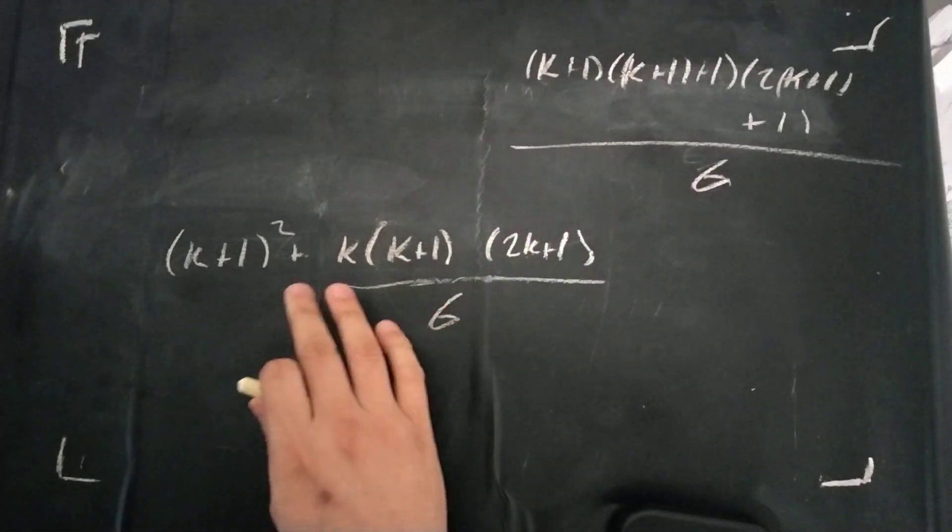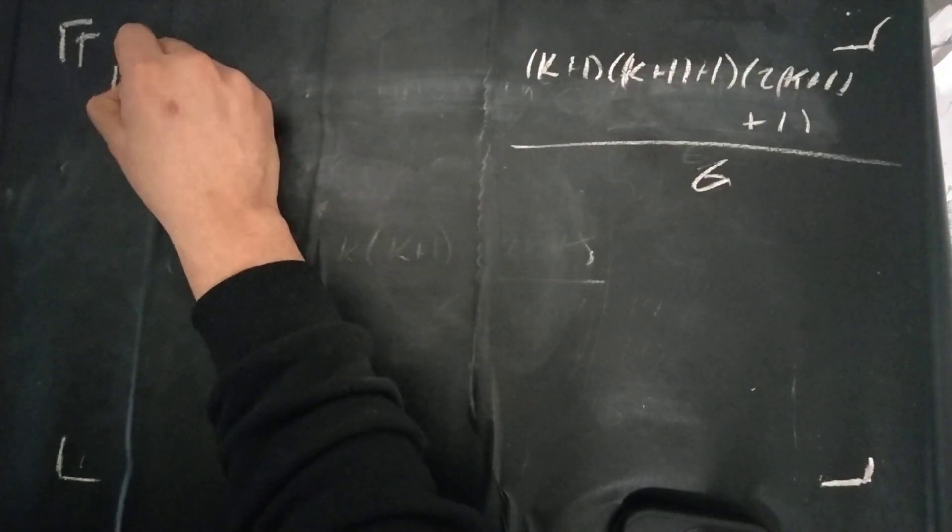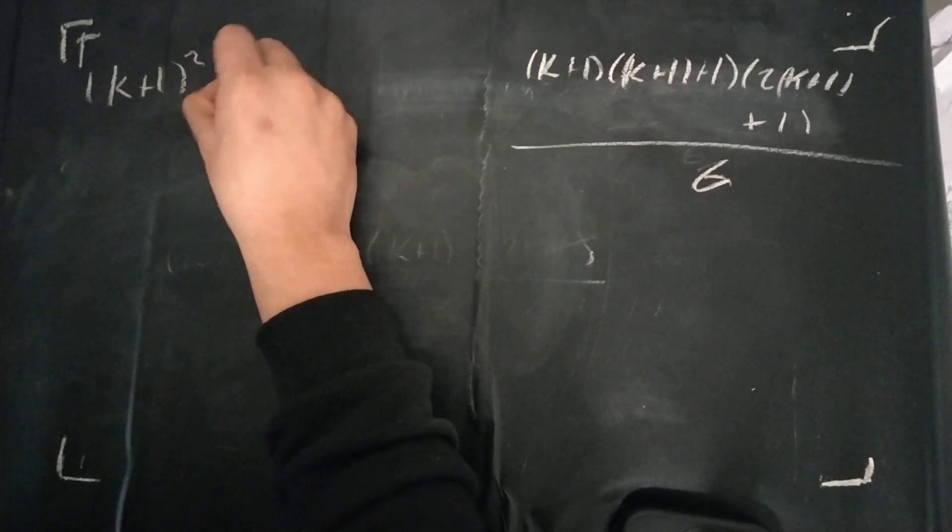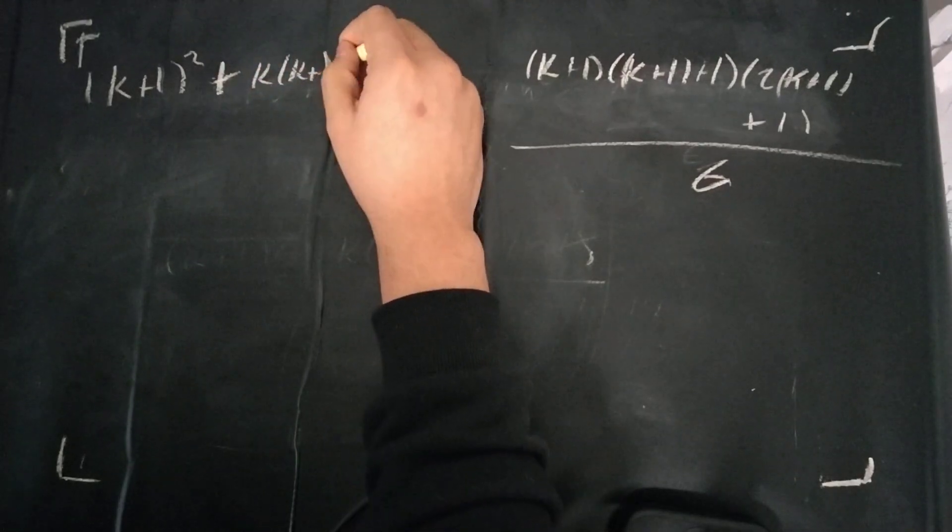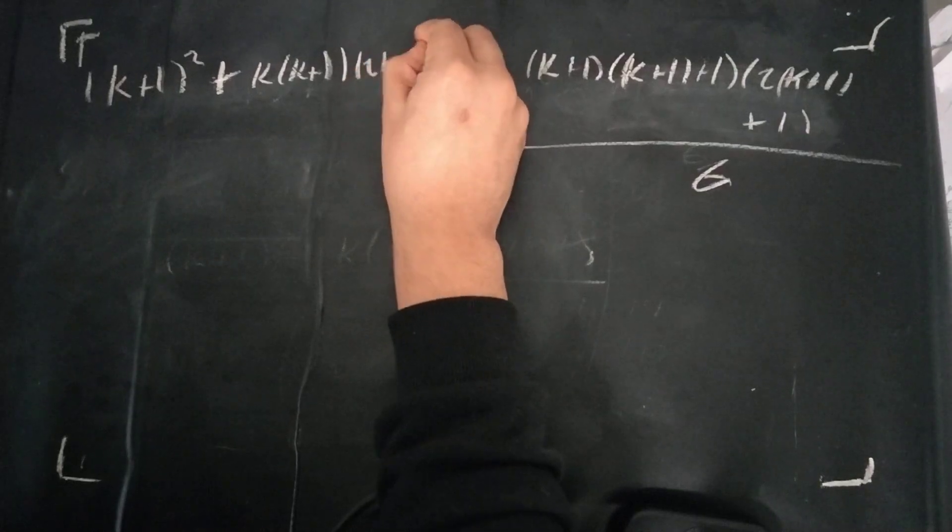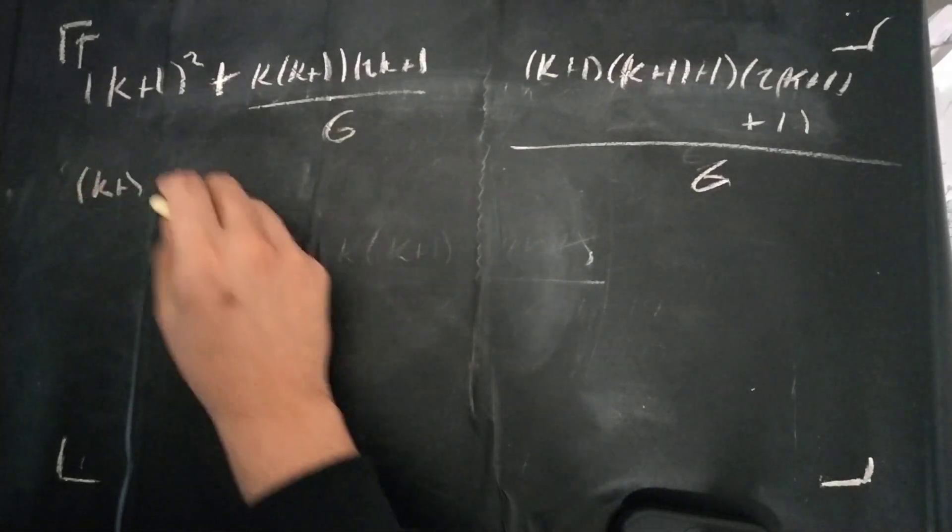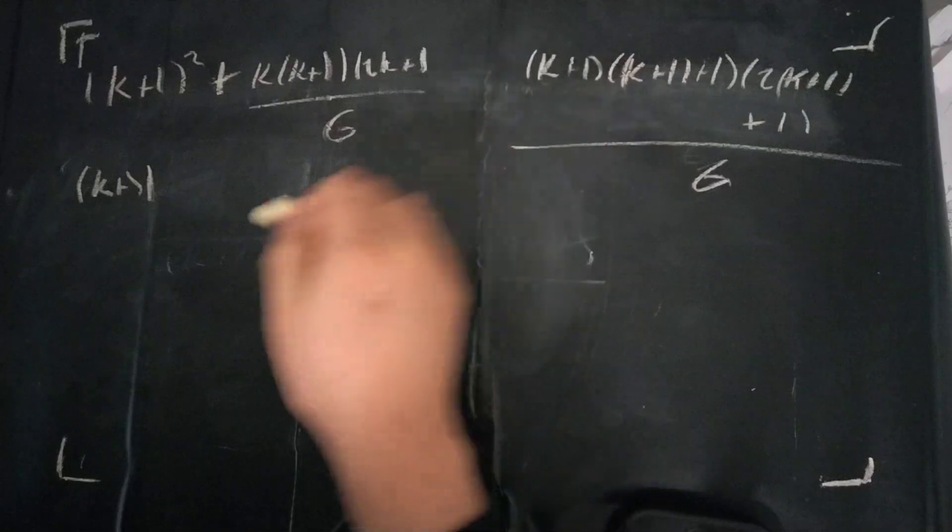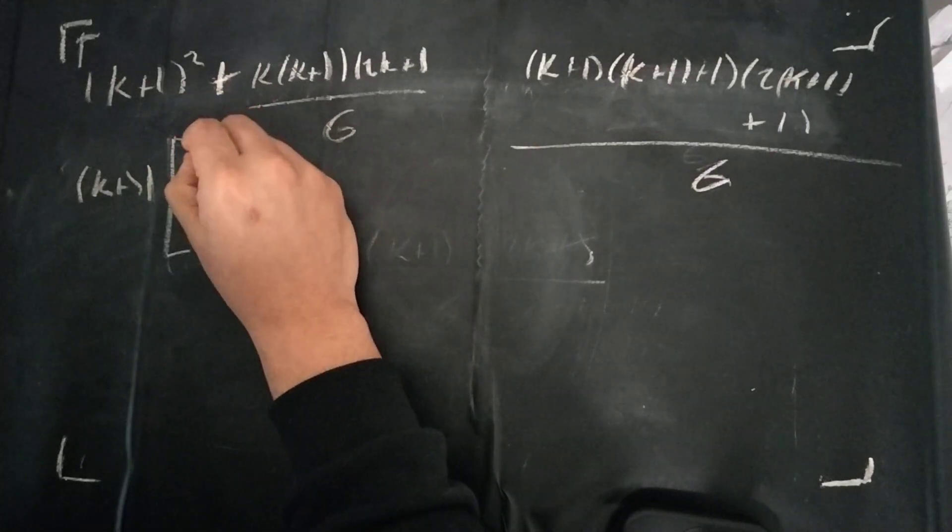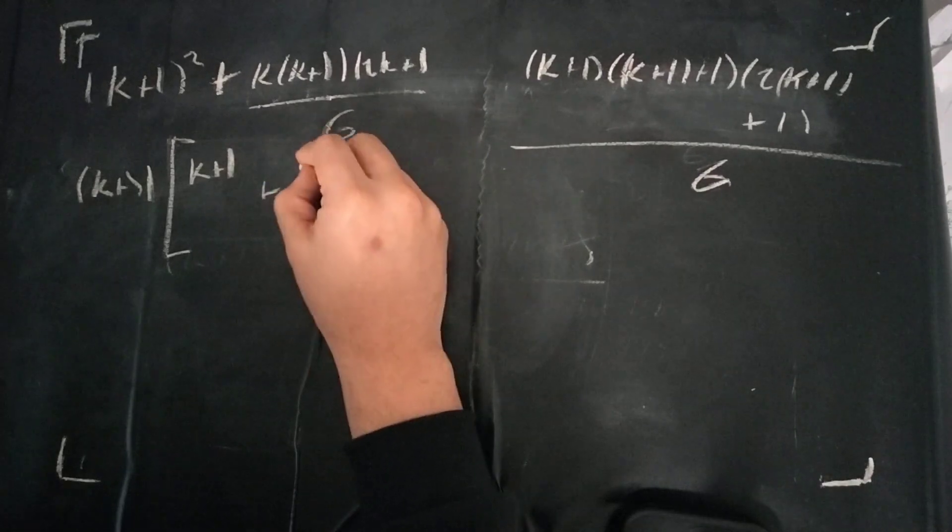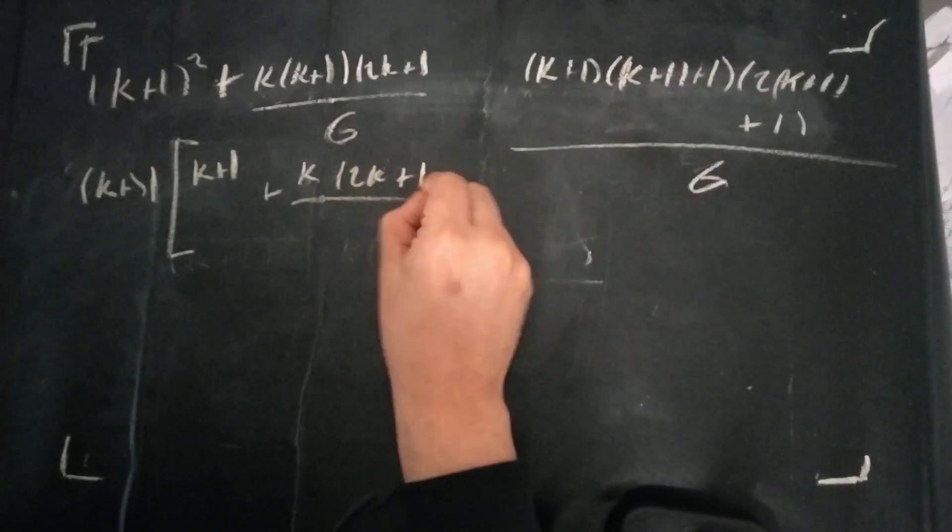So we can start off, we can see that we can, let me just write it in the top right corner again. (k+1)² plus k(k+1)(2k+1)/6. We can factor out a k+1 term here. So we get k+1, and this comes in handy because now we have this k+1 term over here. Let's see, I'll write it in brackets. (k+1)(k+1 + k(2k+1)/6).